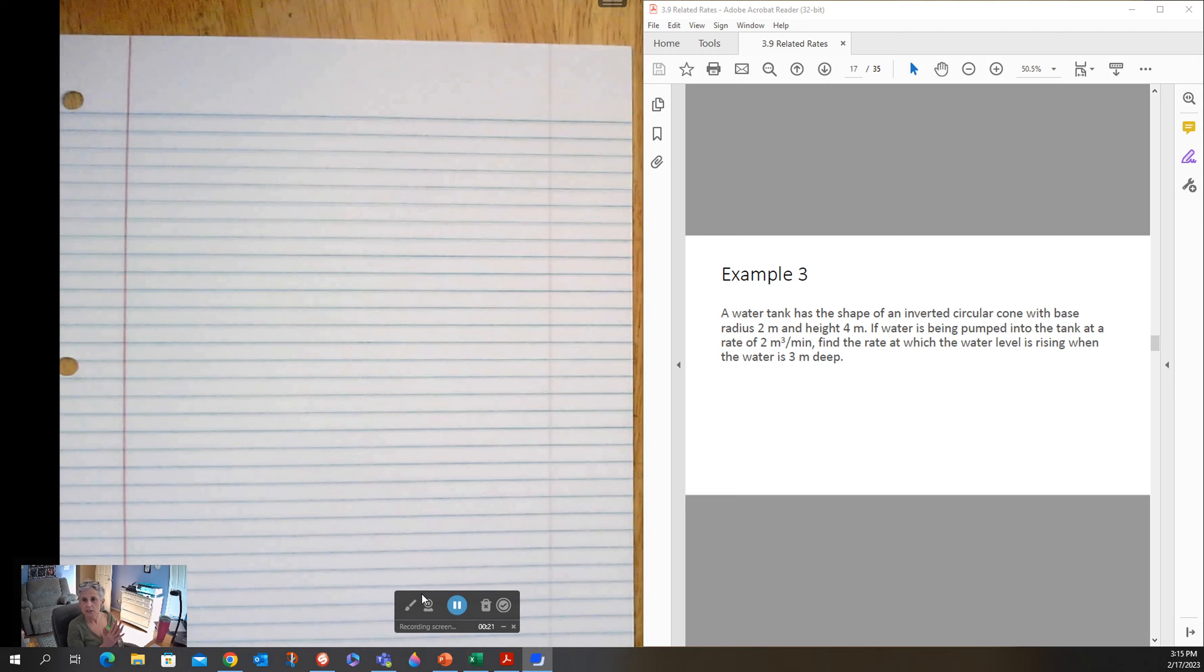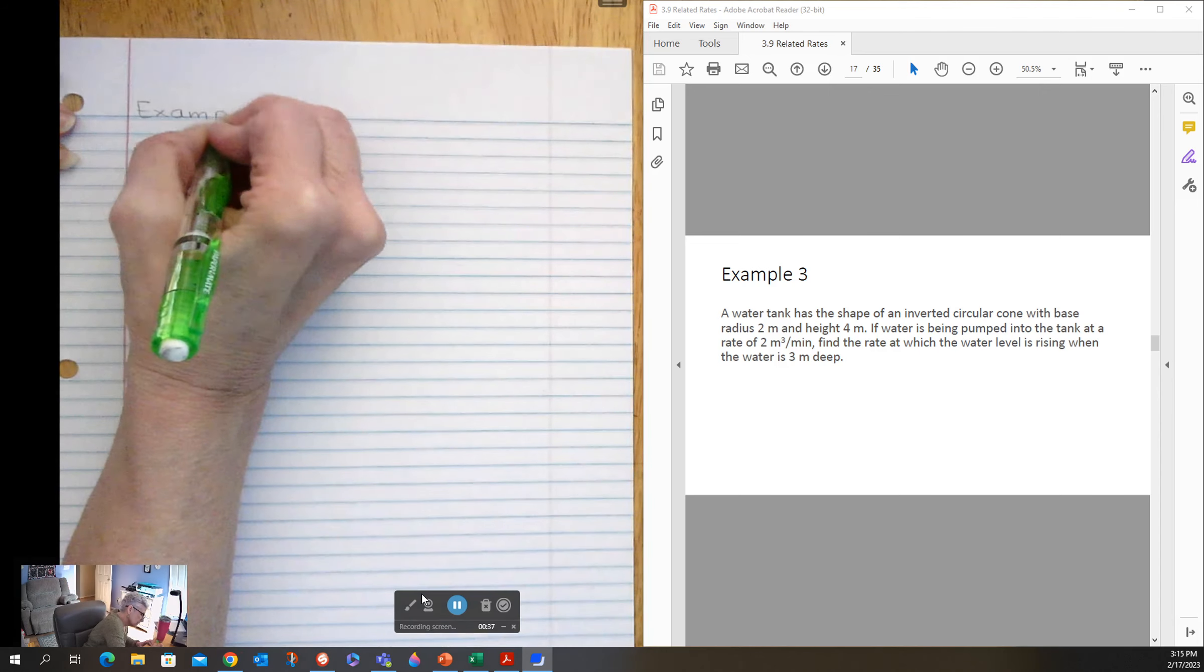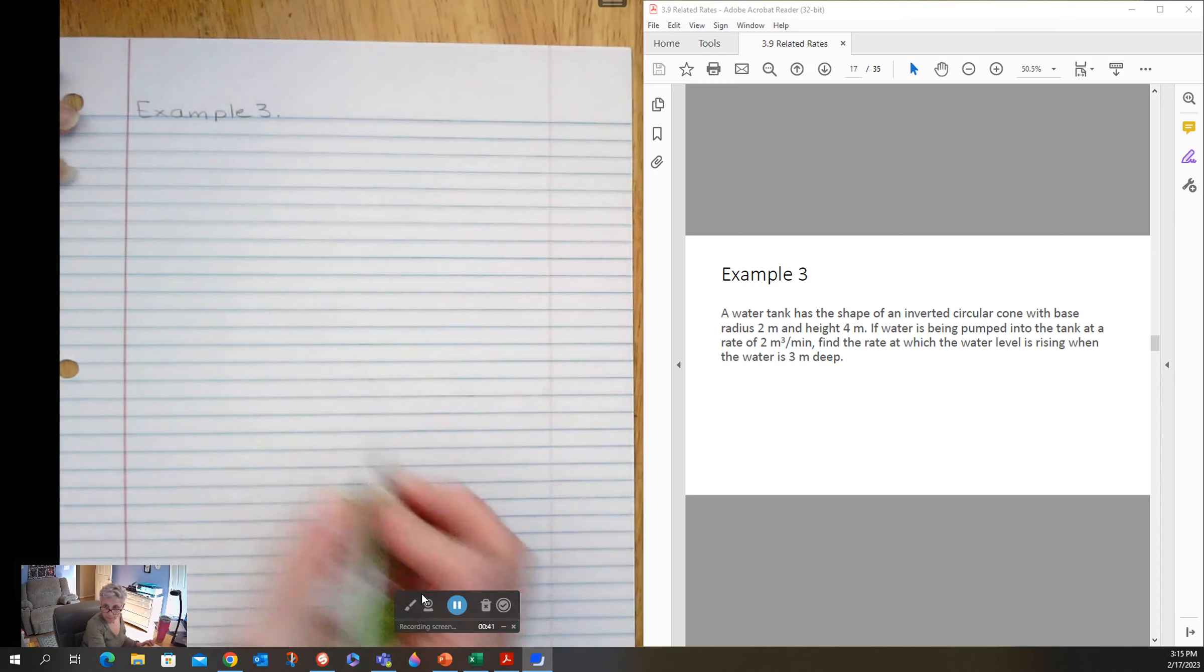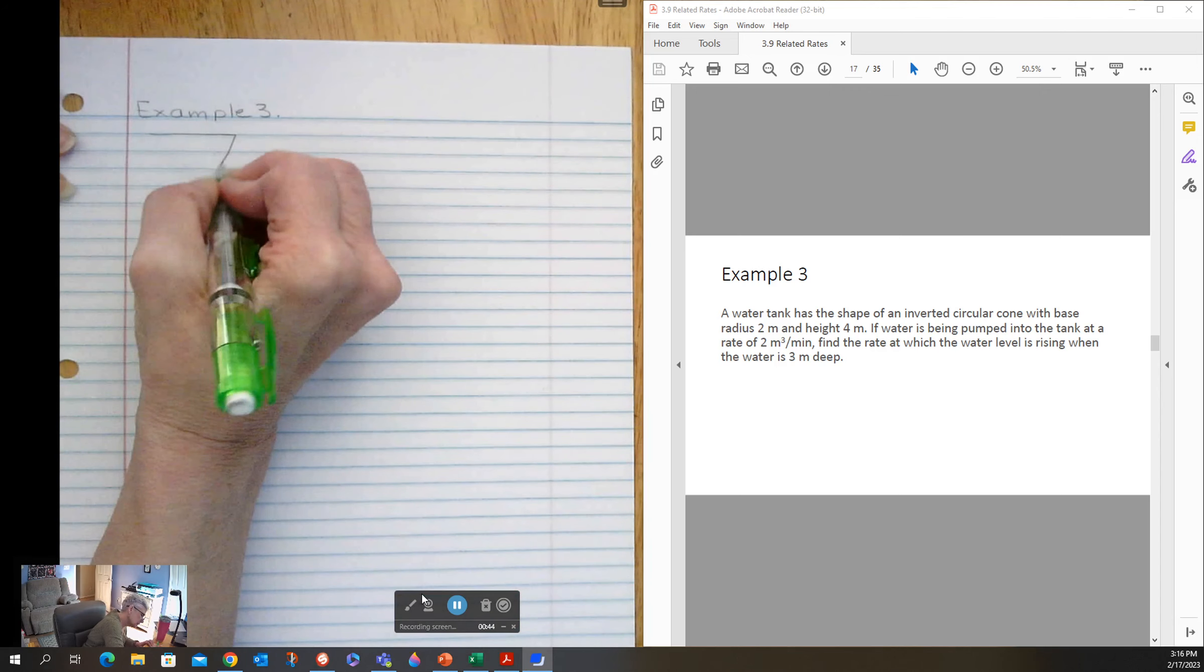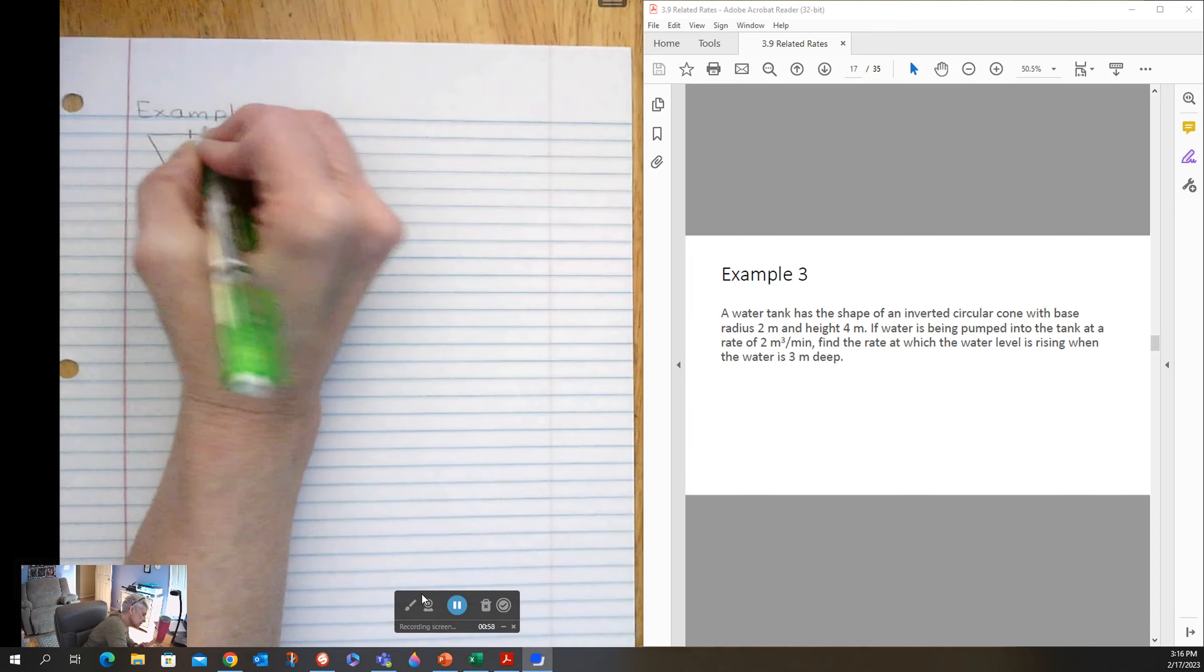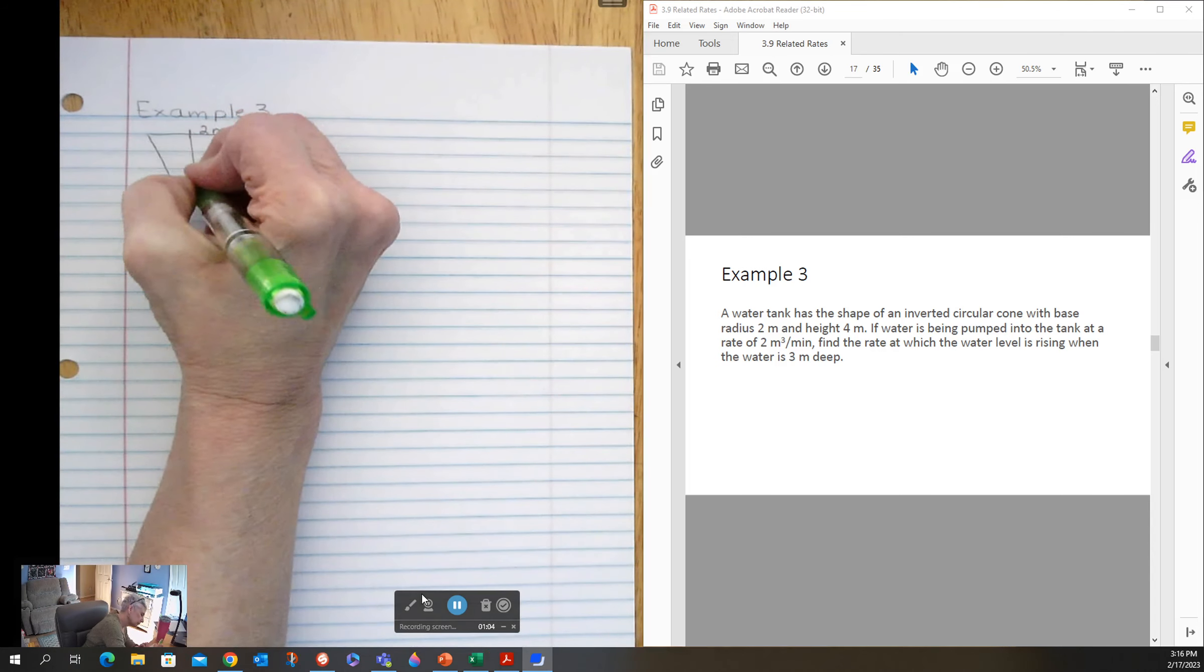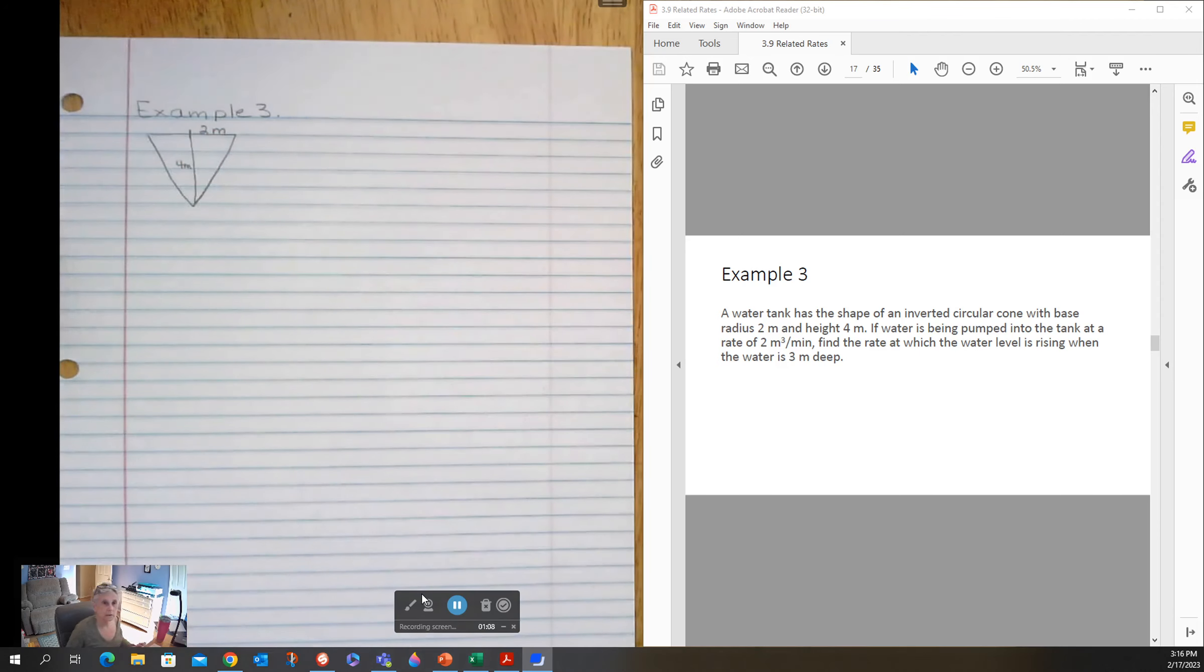So the water tank has the shape of an inverted circular cone with a base of two meters and a height of four meters. I generally don't try to draw a cone; I draw a triangle instead. So, example three. And it's inverted—that means it's sitting on its point. So we just pretend that that's a cone. And it has a base radius of two meters. So two meters and a height of four meters.